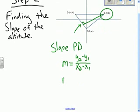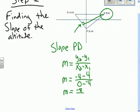And if we plug in what we know, we could say that negative 4 minus 4 over x2 would be 0 minus a negative 4. So m equals negative 4 minus 4 would be negative 8, and 0 minus a negative 4 would be 4. So that means the slope of this is negative 2.